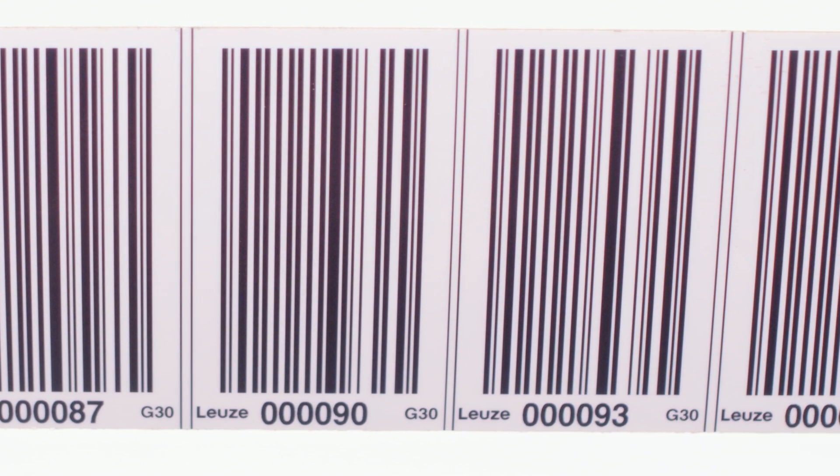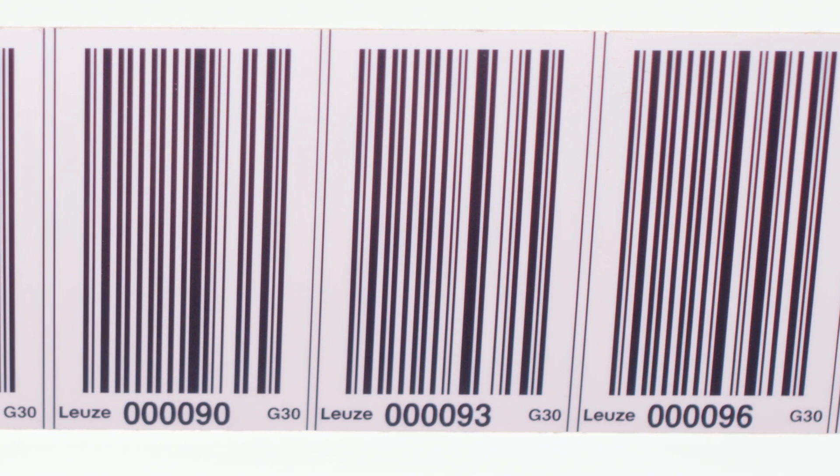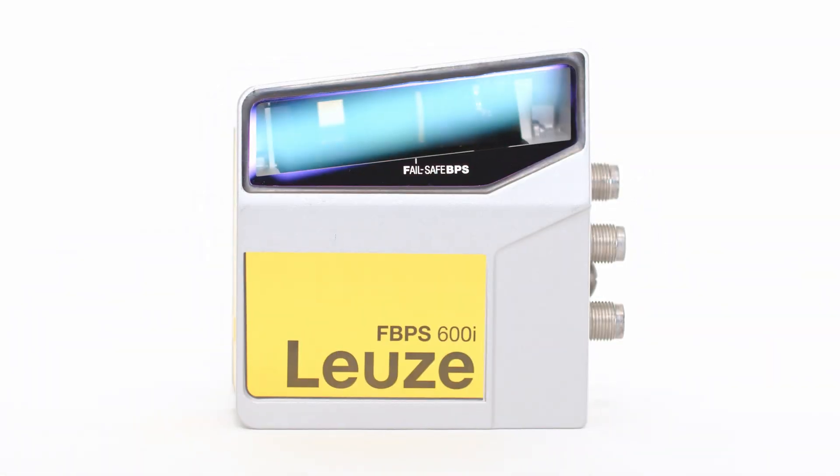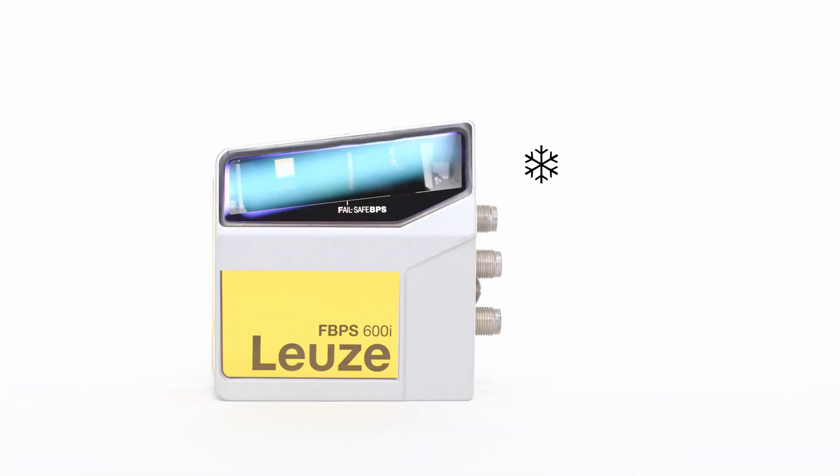The optional heating function extends the allowed temperature range to minus 35 degrees Celsius for use in deep freeze warehouses.